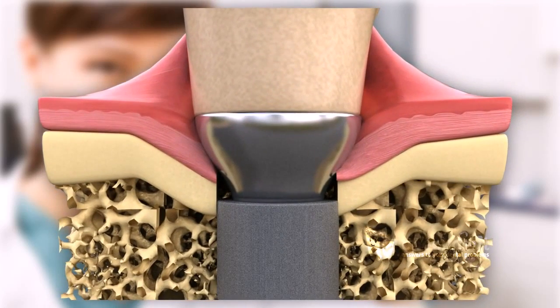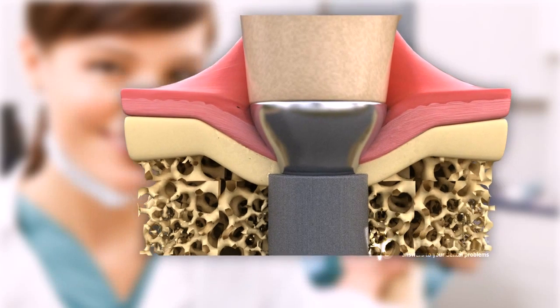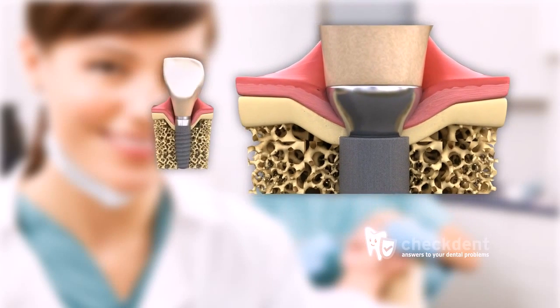As a result, manufacturers renounced polished surfaces as well. Implants with conical connections showed bone development all the way to the abutment. Therefore, the implant shoulders could also be roughened.